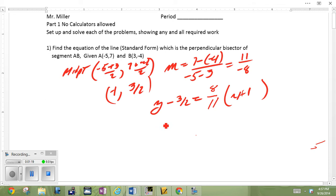From there, it needs to go to standard form, multiply everybody by 11. 11y minus 33 halves equals 8x plus 8. So standard form, ax plus by equals c. No fractions, clear out the fractions, multiply everybody by 2.